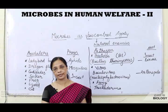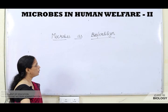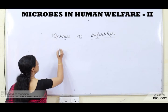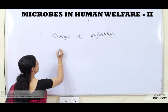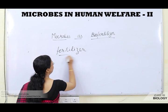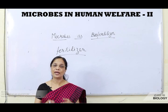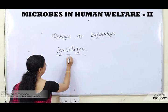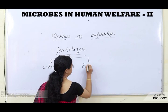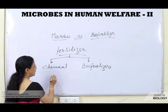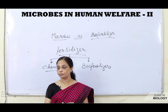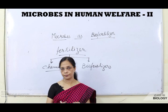Next we will study microbes as bio-fertilizers. Fertilizers are substances added into the soil to enrich its fertility. They are of two basic types: chemical fertilizers and bio-fertilizers. After the Green Revolution, farmers adopted chemical fertilizers to increase yield, but being chemical products, they have disadvantages.